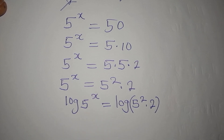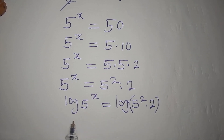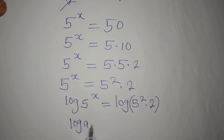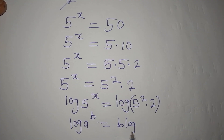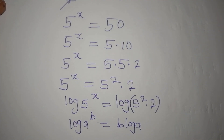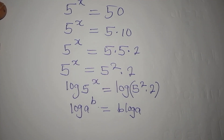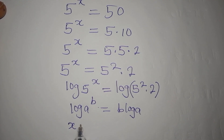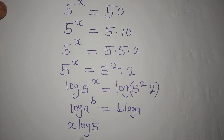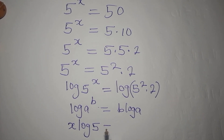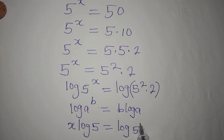There is a law that says if you have log of a to the power of b, it is the same thing as b times log a. So we bring the x down to get x log 5, and the right side is the log of 5 squared multiplied by 2.